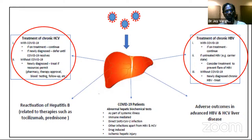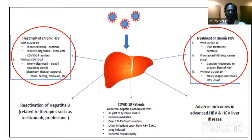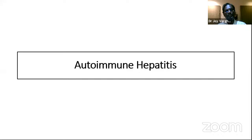For hepatitis B virus, which is morally common in our country, the available drugs only control viral load or viral replication — they do not cure. Therefore, hepatitis B therapy must be continued regardless of COVID status. If a patient is identified with hepatitis B, therapy should be started without waiting for COVID virus clearance. This contrasts with hepatitis C, where we wait for COVID clearance before starting treatment.